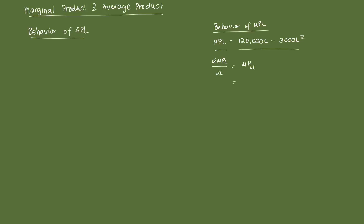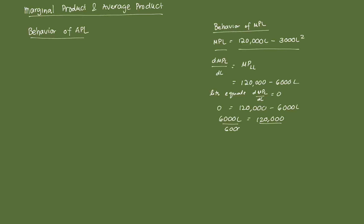We get 120,000 minus 6,000L as the second-order derivative. What we do is equate the derivative — DMPL over DL — equal to zero. So we get 6,000L equal to 120,000. Dividing both sides by 6,000, we get L is equal to 20.